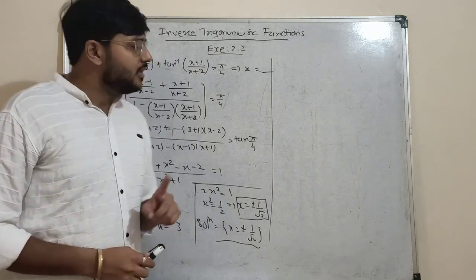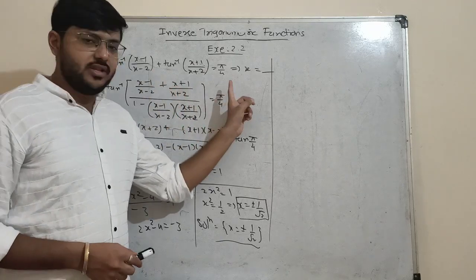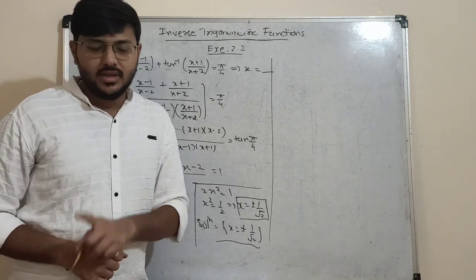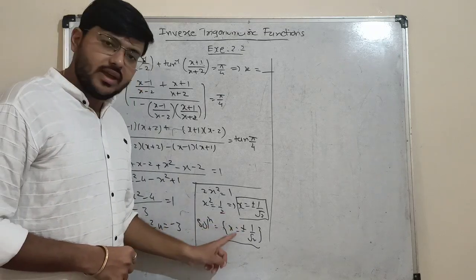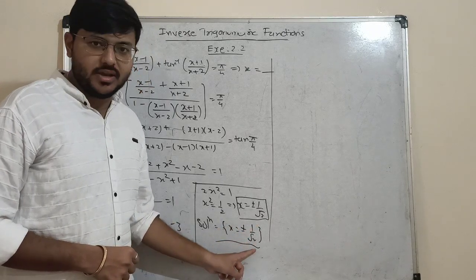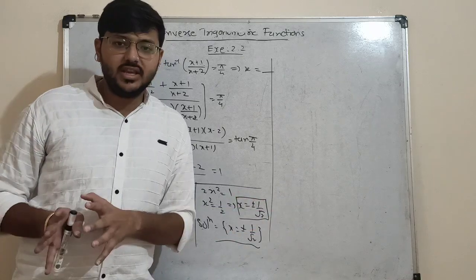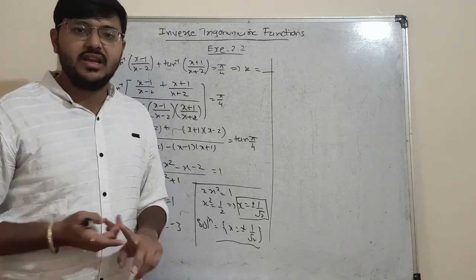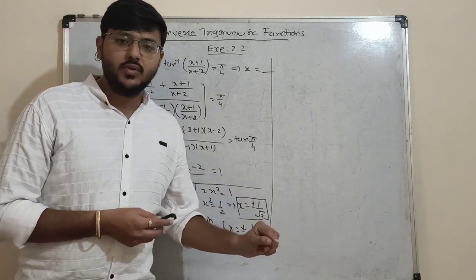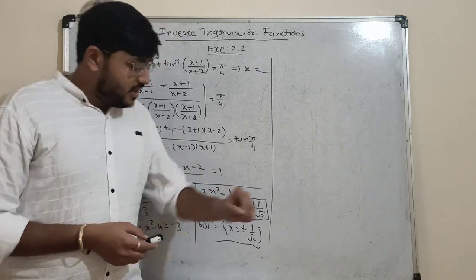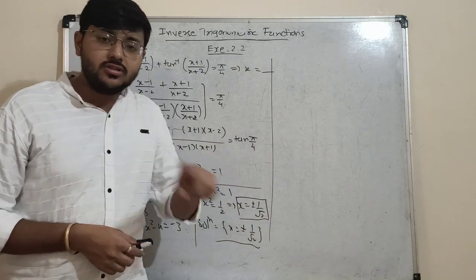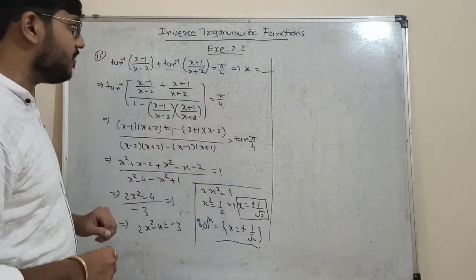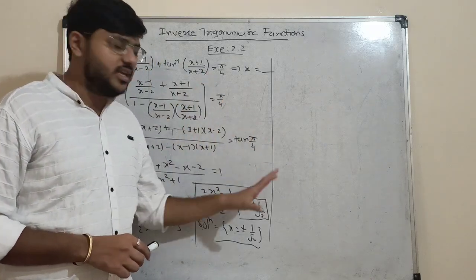One important point: when you find solution-based questions in MCQs, do cross-verification. We get two answers: x = 1/√2 and x = -1/√2. Put both values back into the original equation to verify LHS = RHS. In some MCQ questions, the solutions obtained may not satisfy the original conditions, so keep this in mind.